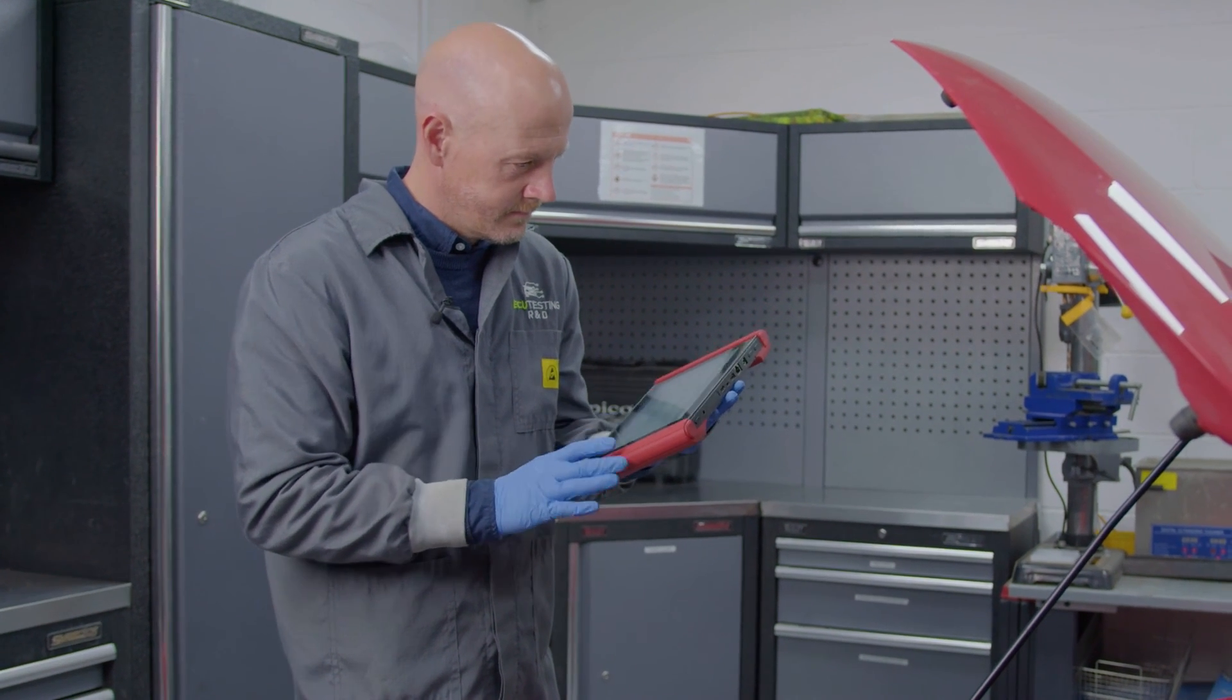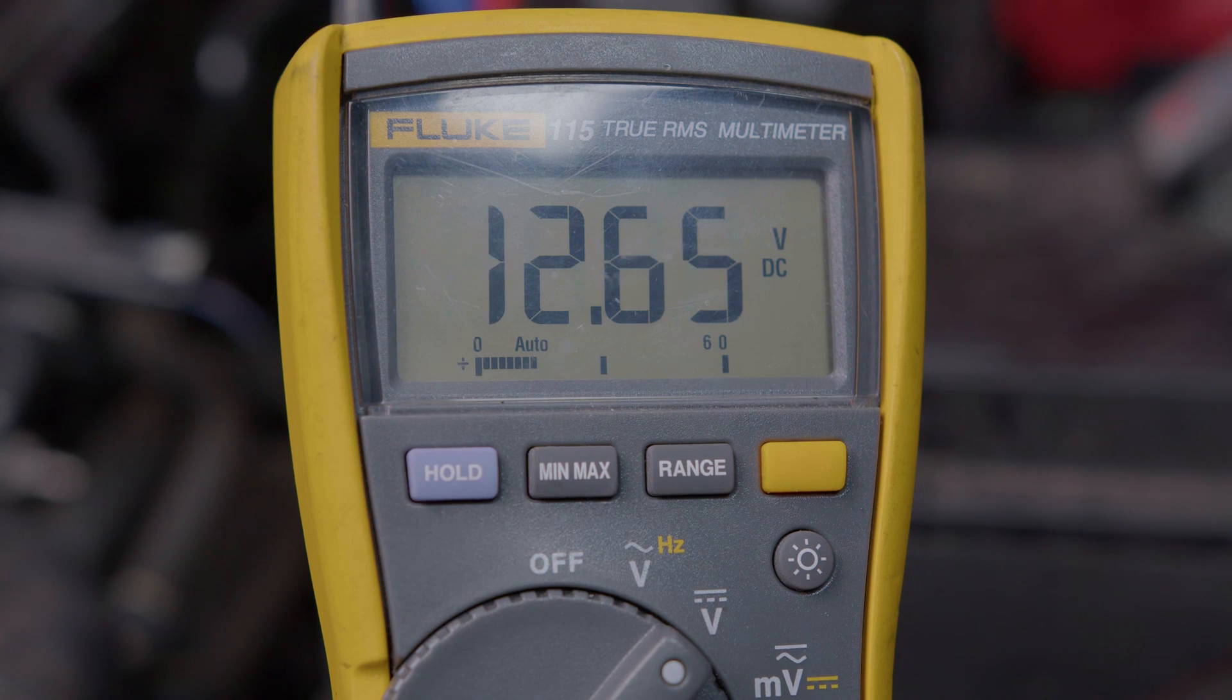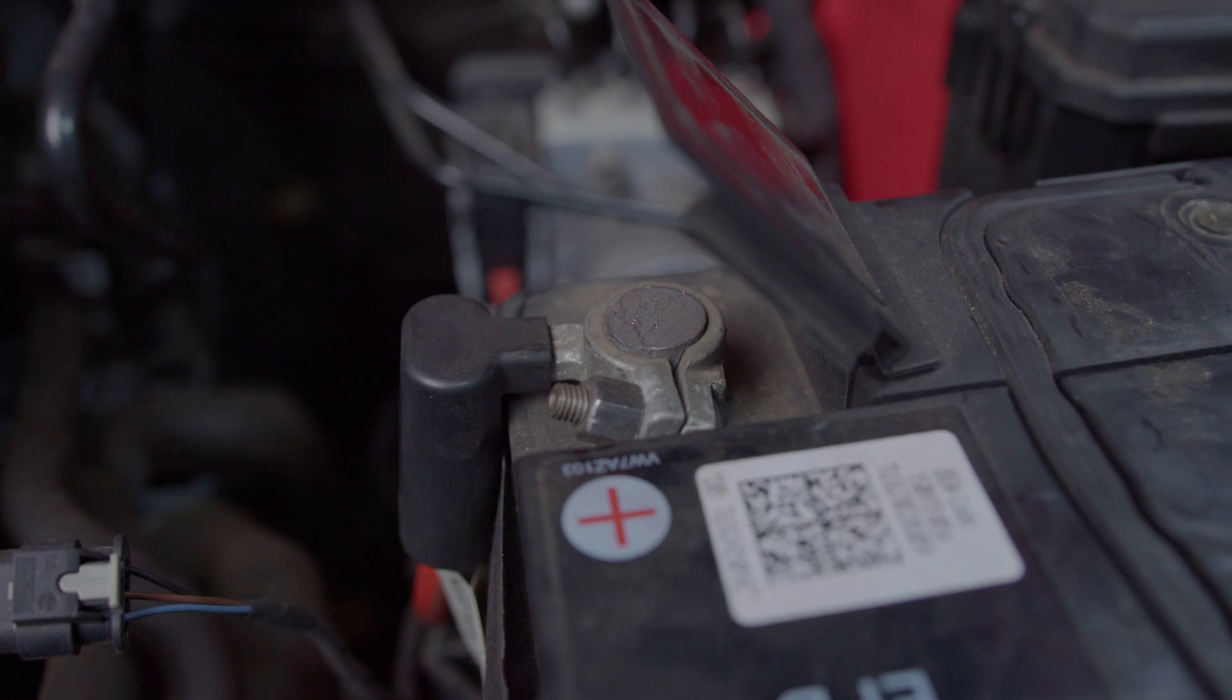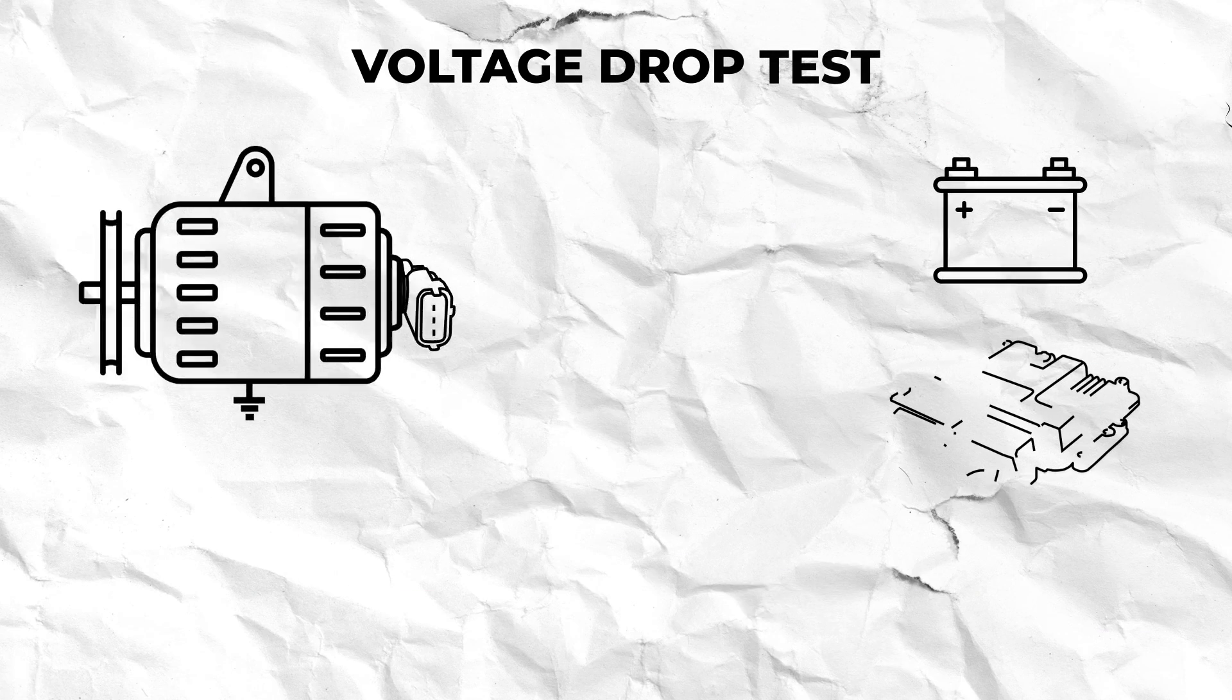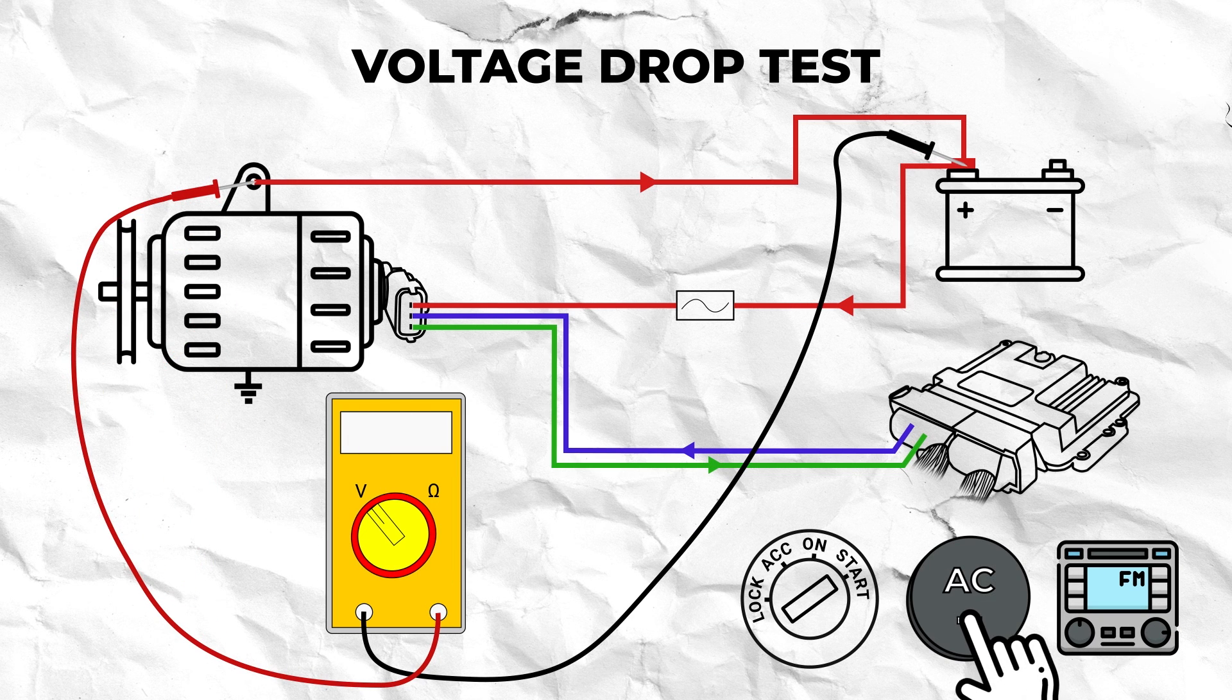If you replaced the fuse and the codes remained or your original tests showed battery voltage then you will need to perform a voltage drop test from the alternator output or B post to battery positive.